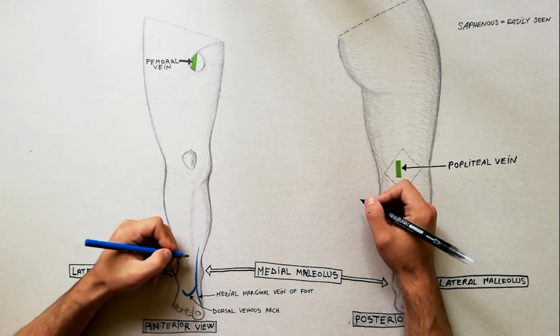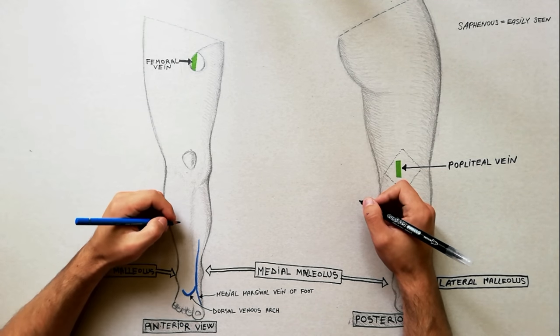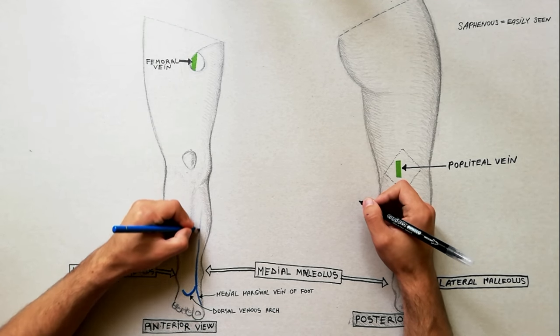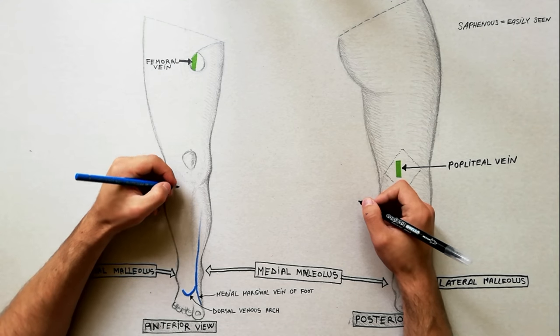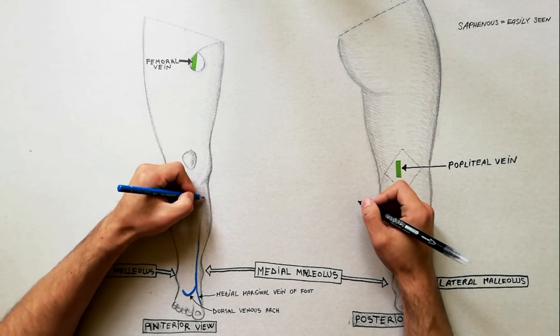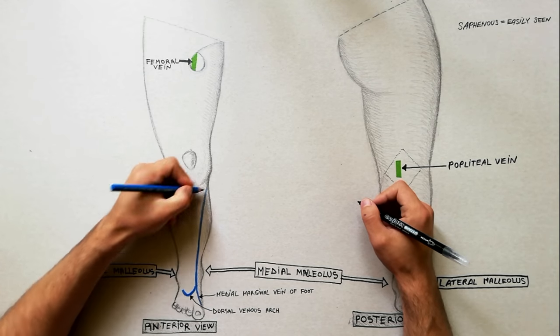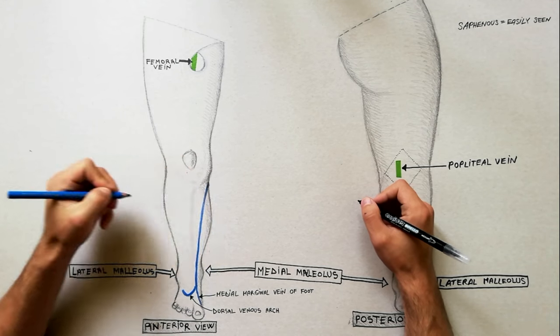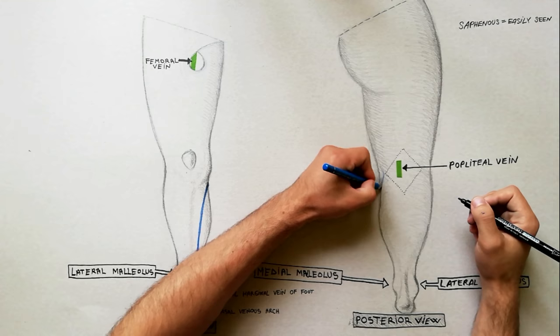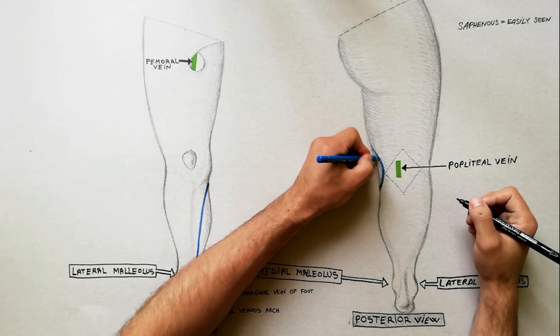The vein runs upward about 2.5 cm in front of the medial malleolus, crosses obliquely the medial surface of the lower third of tibia, and then ascends a little behind the medial border of tibia to reach the knee, where it lies on the posterior medial aspect of the knee joint.